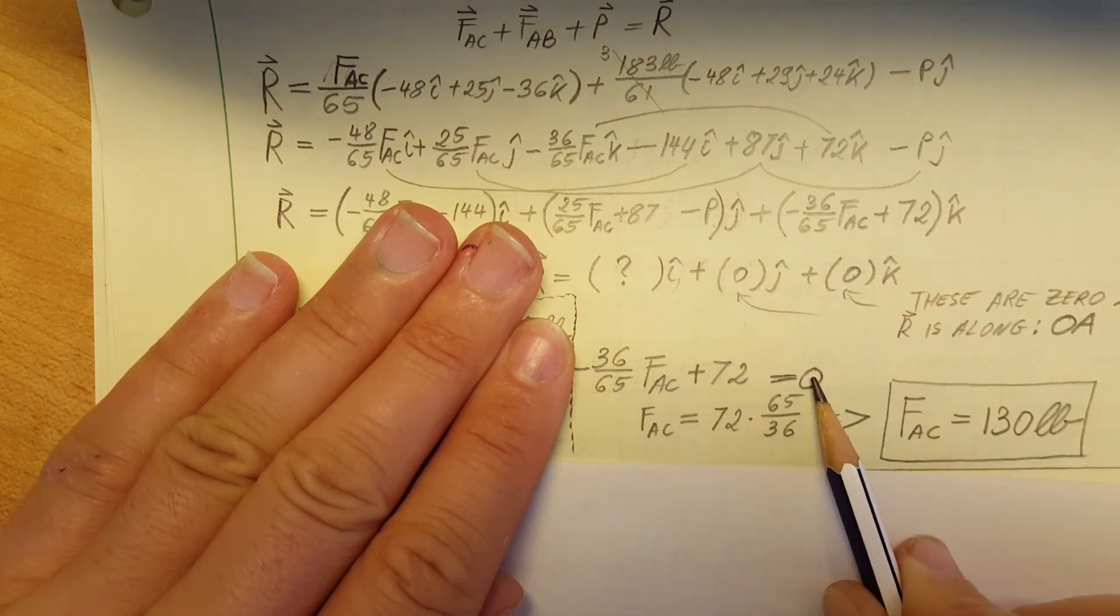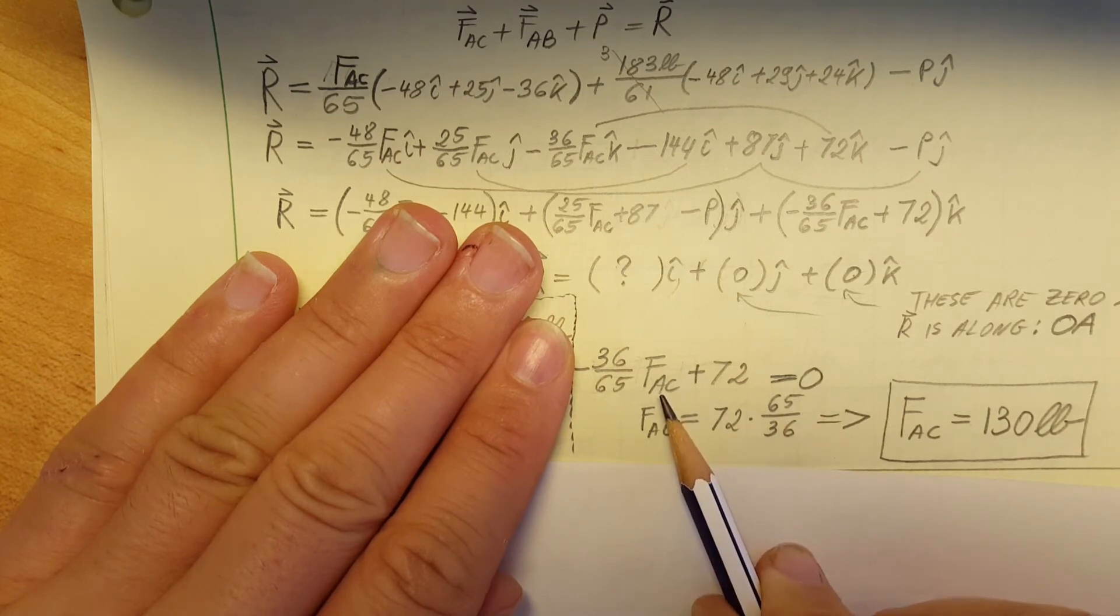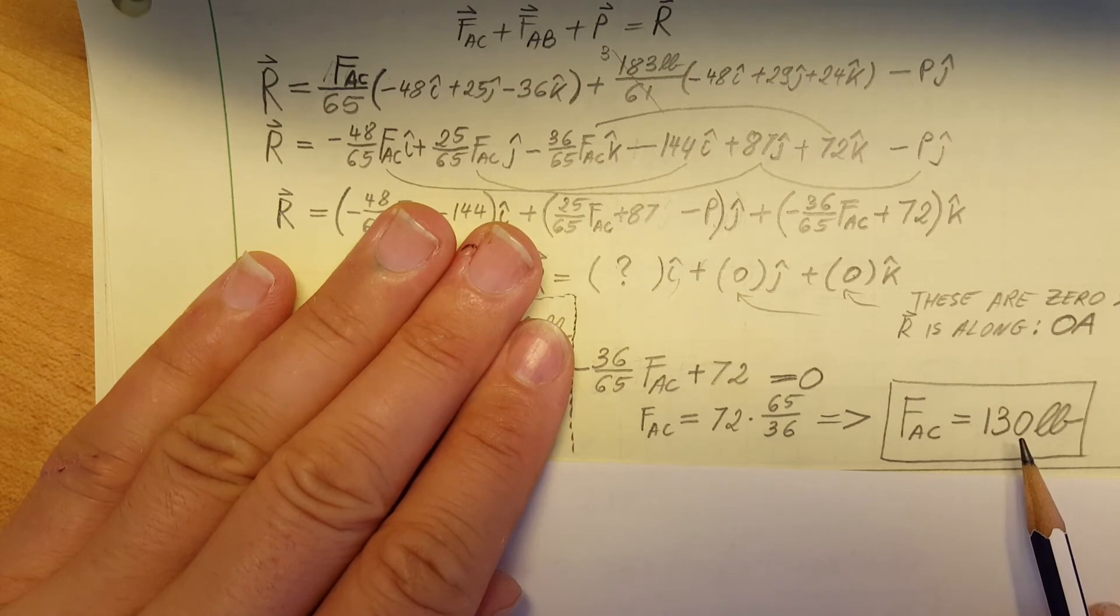There it is. We're gonna take this, put it equal to 0. We can solve for the force AC and this will give us a value of 130 pounds.